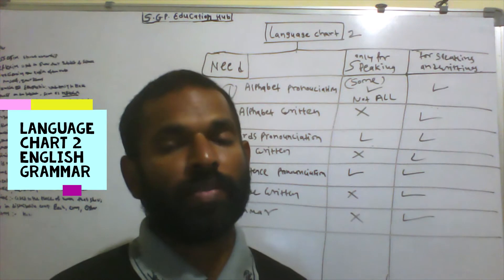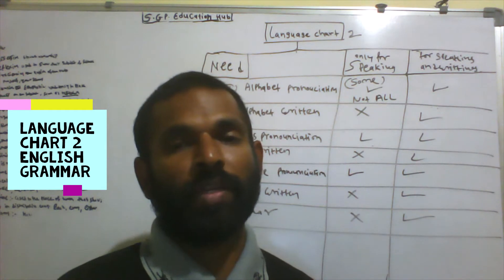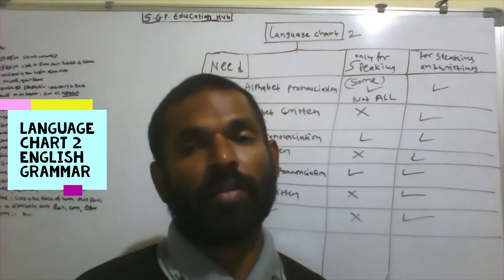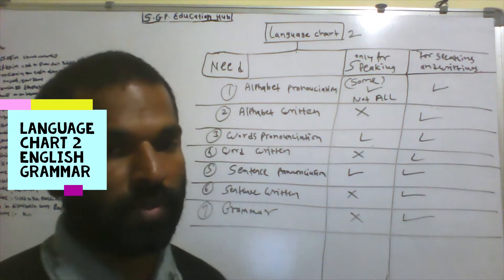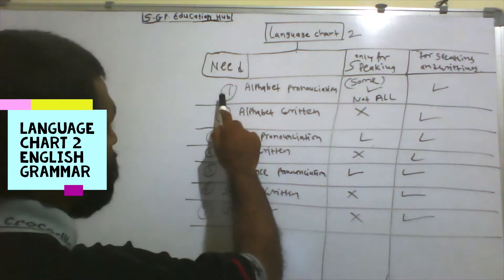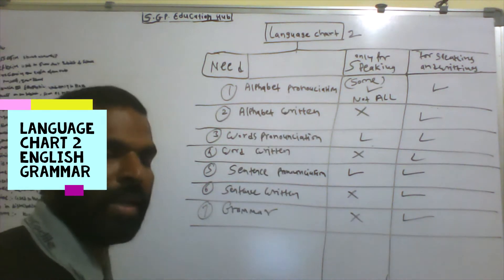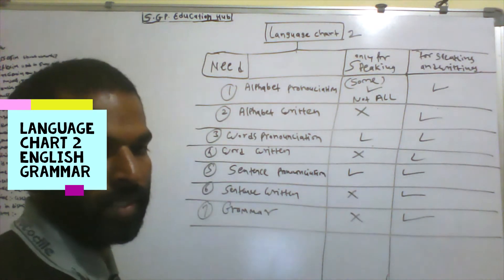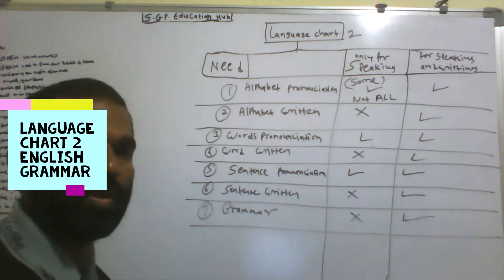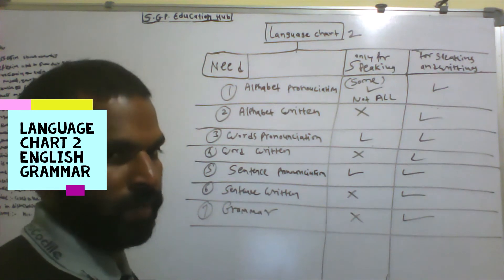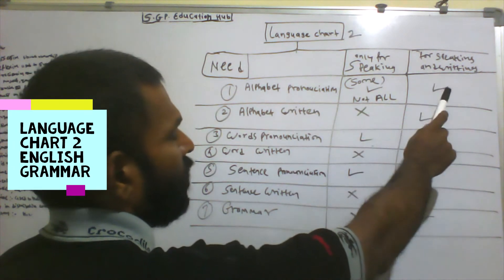If you want to learn only speaking, there is no need to go to any school — you only need some principles. If you want to learn both speaking and writing, then you need different types of skills. The first point is alphabetical pronunciation. If you want to learn any language, there must be alphabets. If you want to only speak, then you do not need to pronounce all alphabets correctly, but some alphabets need to be pronounced. For speaking and writing, all alphabets are needed.